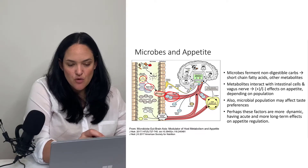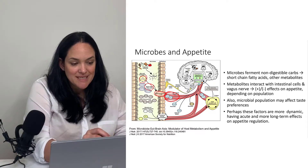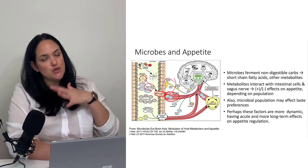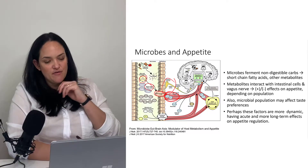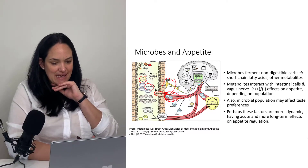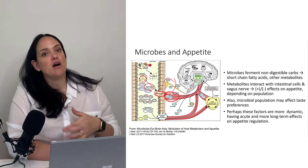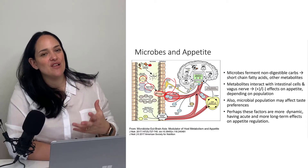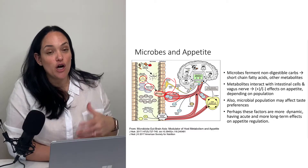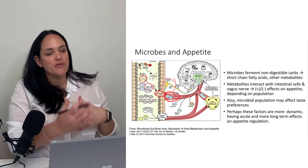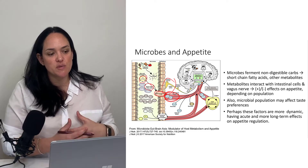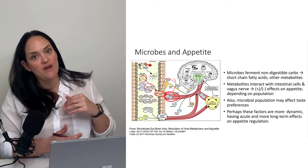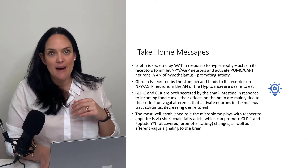Perhaps those metabolites also interact with the vagus nerve and affect appetite that way, but quite honestly, a lot of this is still not clear. This is one of the proposed mechanisms by which our microbiota can affect appetite.